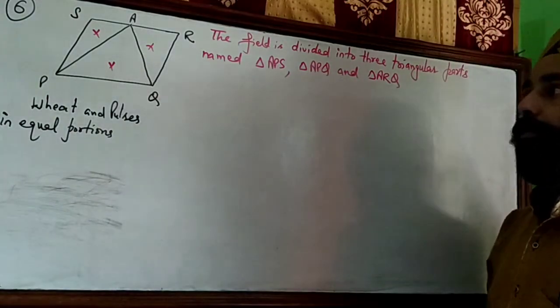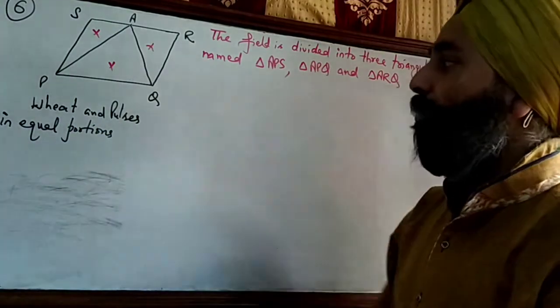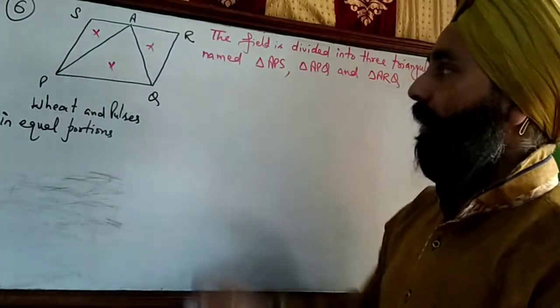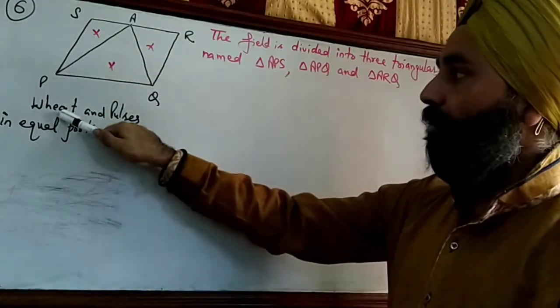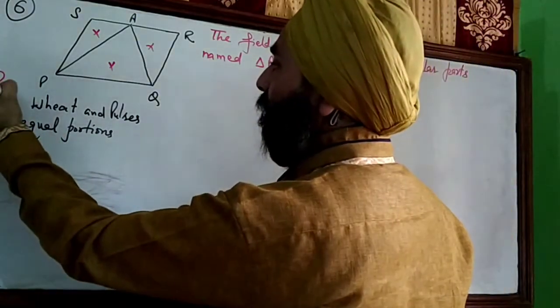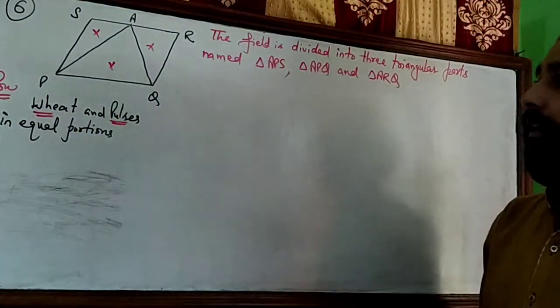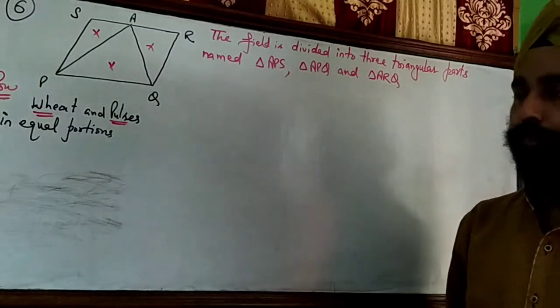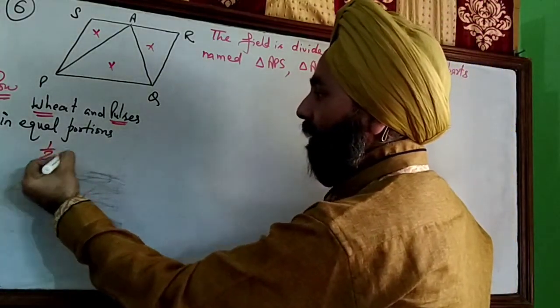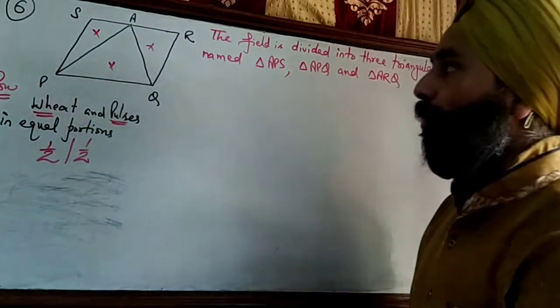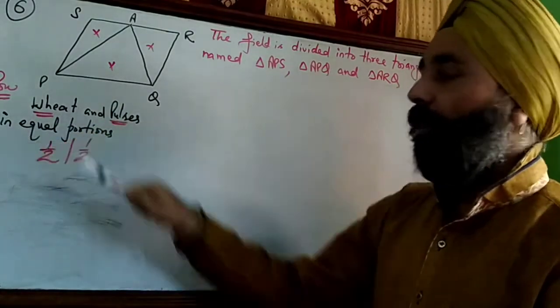Now the farmer wants to sow wheat and pulses in equal portions of the field. How should she do it? The answer is very simple. If we divide the field into two equal halves, then we can find how wheat and pulses can be sown in equal portions of the field.